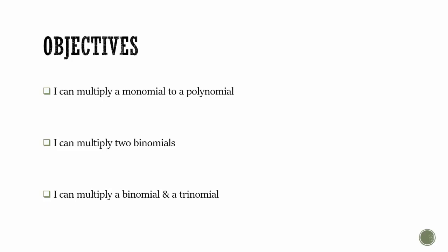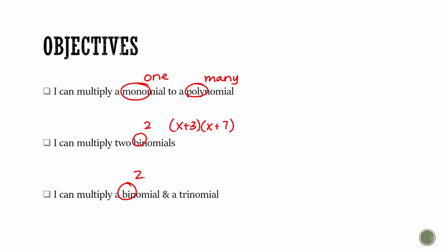Remember, these are vocab words from before. This means one, and this means many. Two binomials means two things with two, so it'll look something like this. And a binomial and a trinomial — so you have a two and a three.